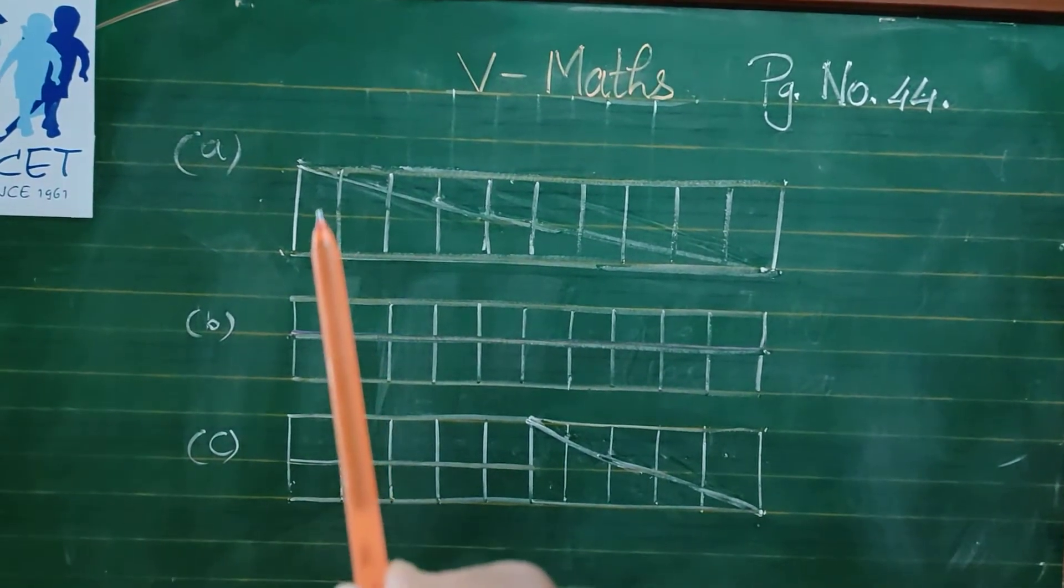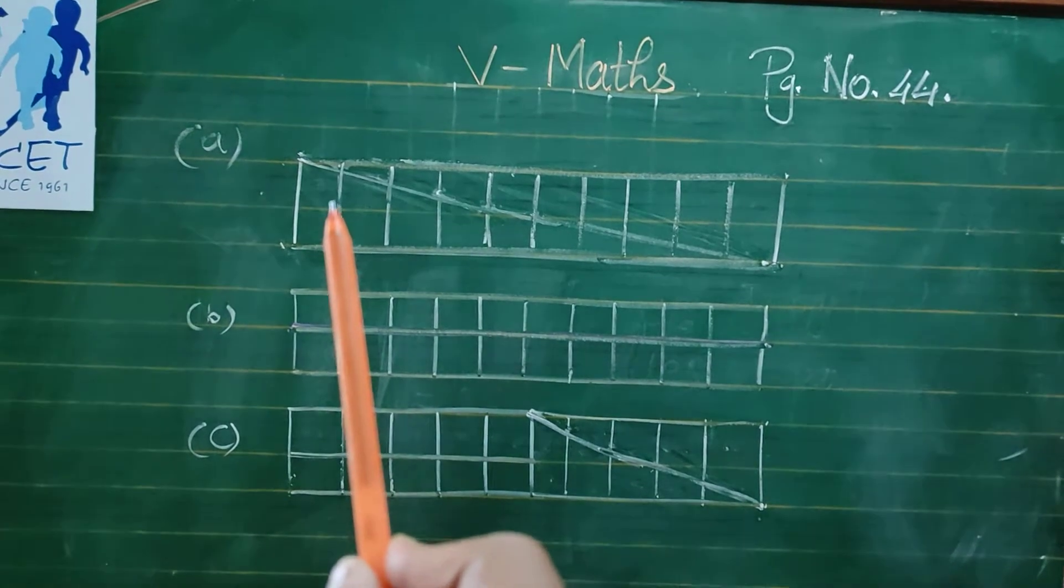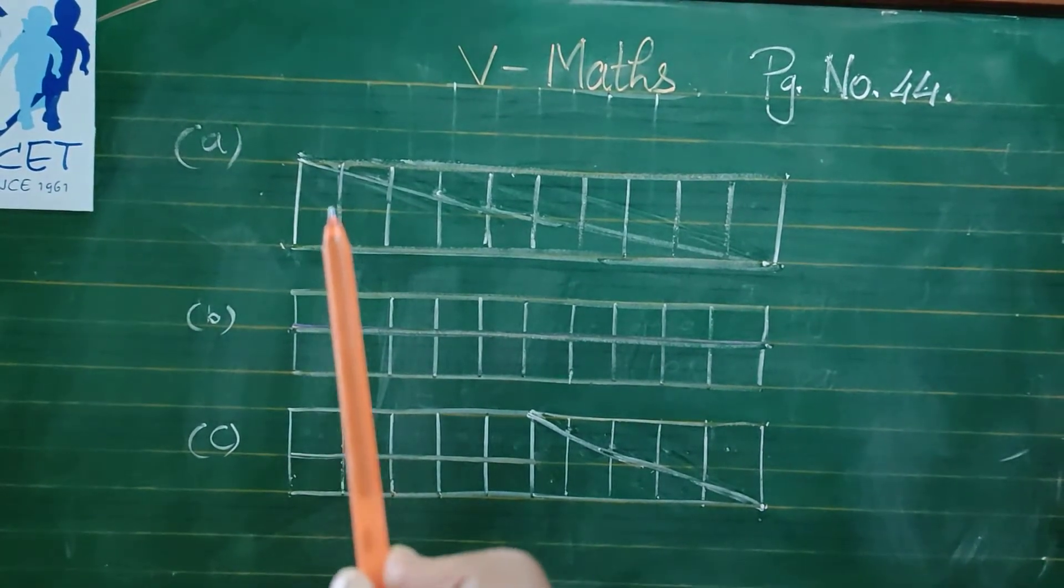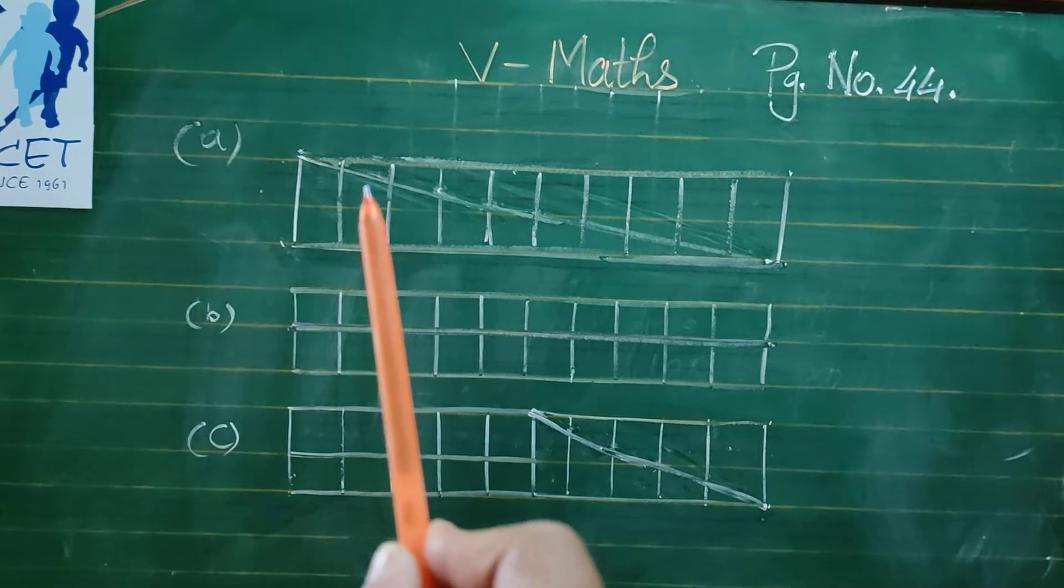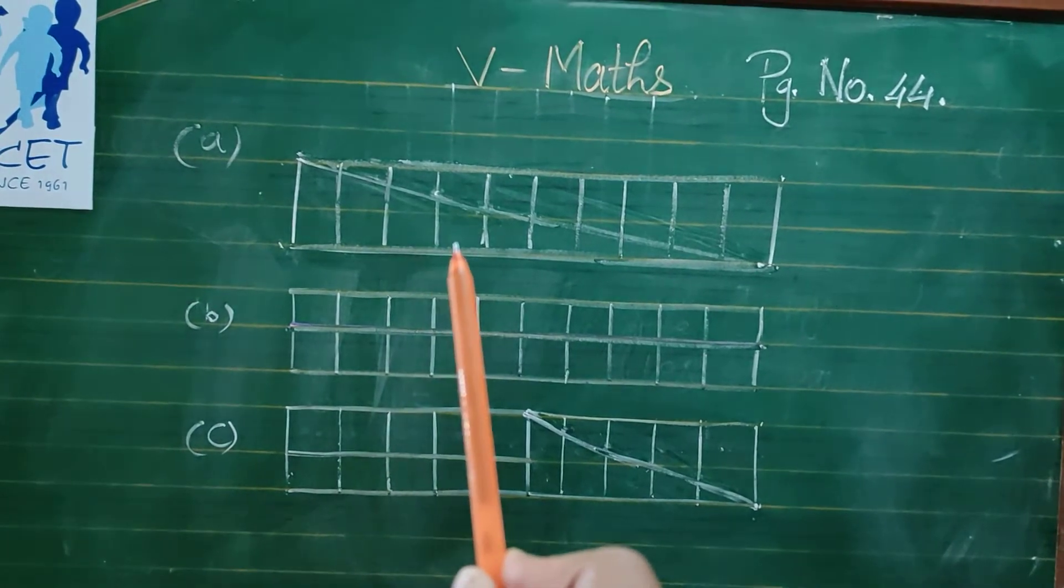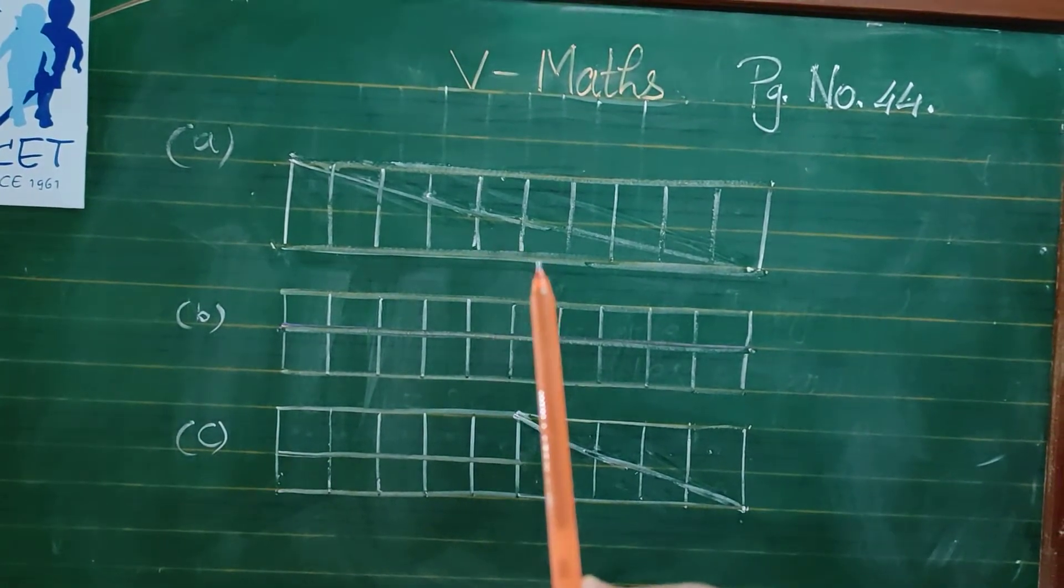Now count the full squares: 1, 2, 3, more than half, 3, 4, 5, 6, 7, 8, 9, 10.